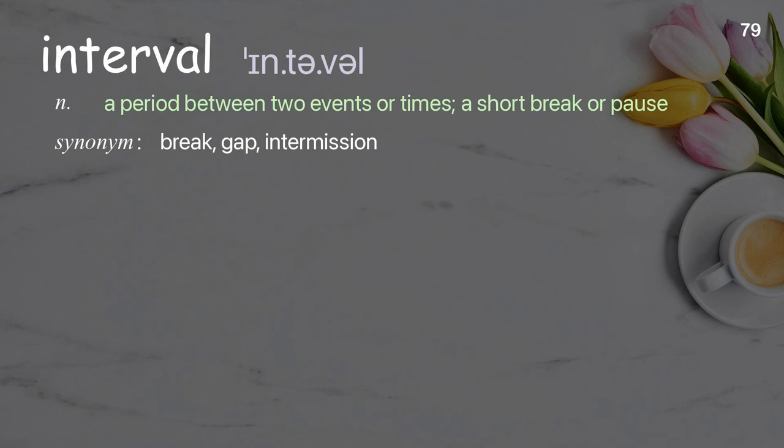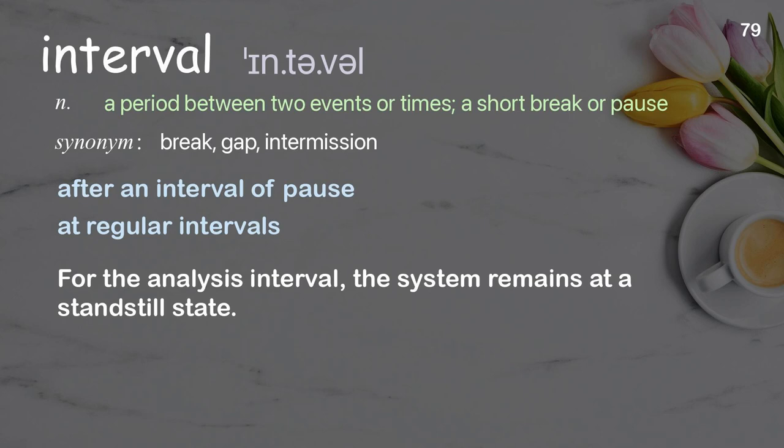Interval: a period between two events or times; a short break or pause. Examples: after an interval of pause; at regular intervals; for the analysis interval, the system remains at a standstill state.